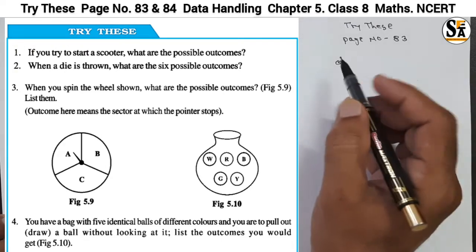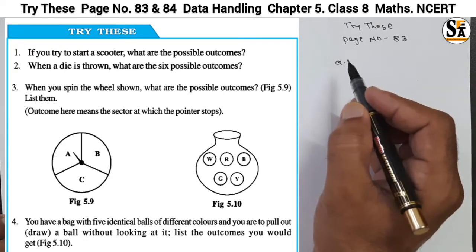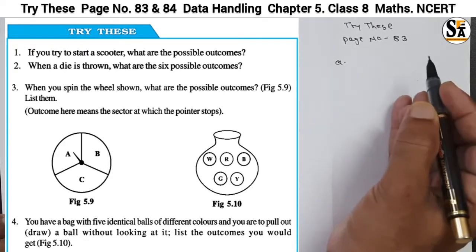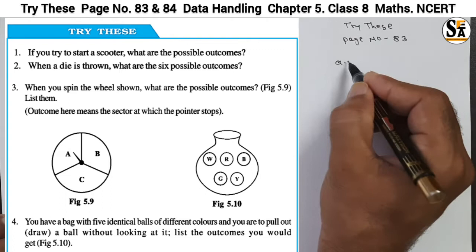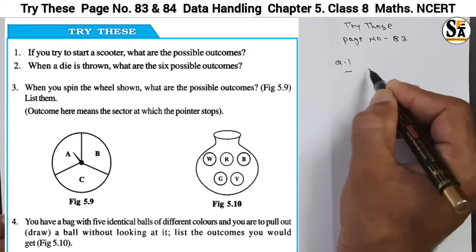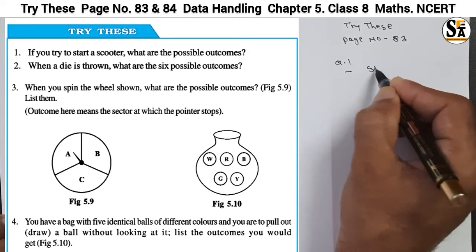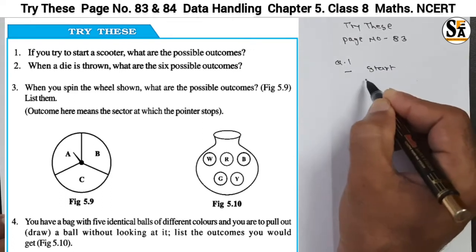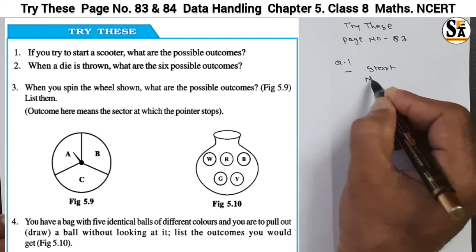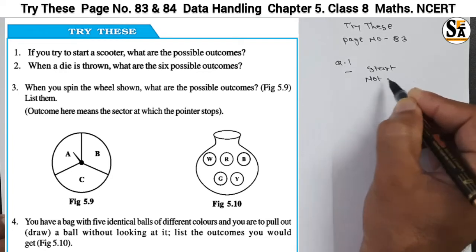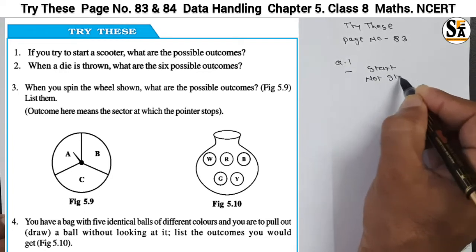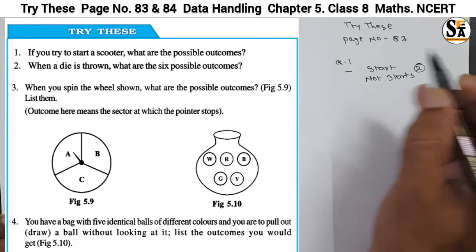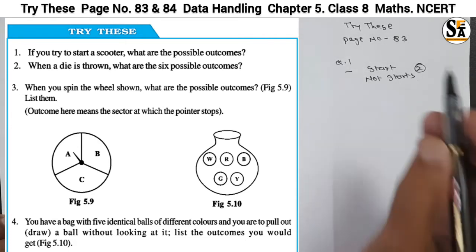If we start the scooter, it will start or not start. So the possible outcomes will be: it will start, or it will not start. These are the two outcomes if we try to start a scooter.